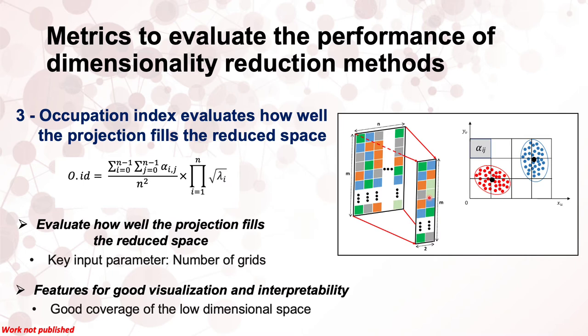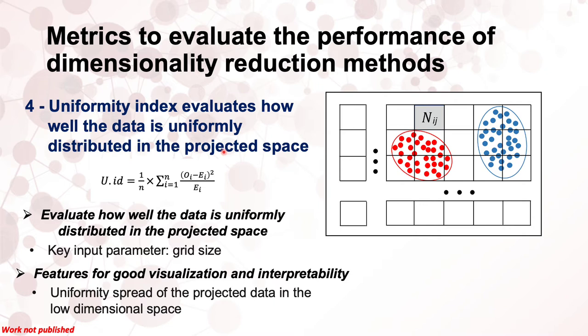The third metric, named the occupation index, assesses how close the coverage of the low-dimensional space is to the coverage of the original space. It is defined in terms of alpha, which is the number of points in the grid, and the singular value lambda of the high-dimensional matrix. The fourth metric, the uniformity index, measures the uniform spread of data in the low-dimensional space in terms of grid size, defined with respect to the actual and expected number of points in each grid cell.